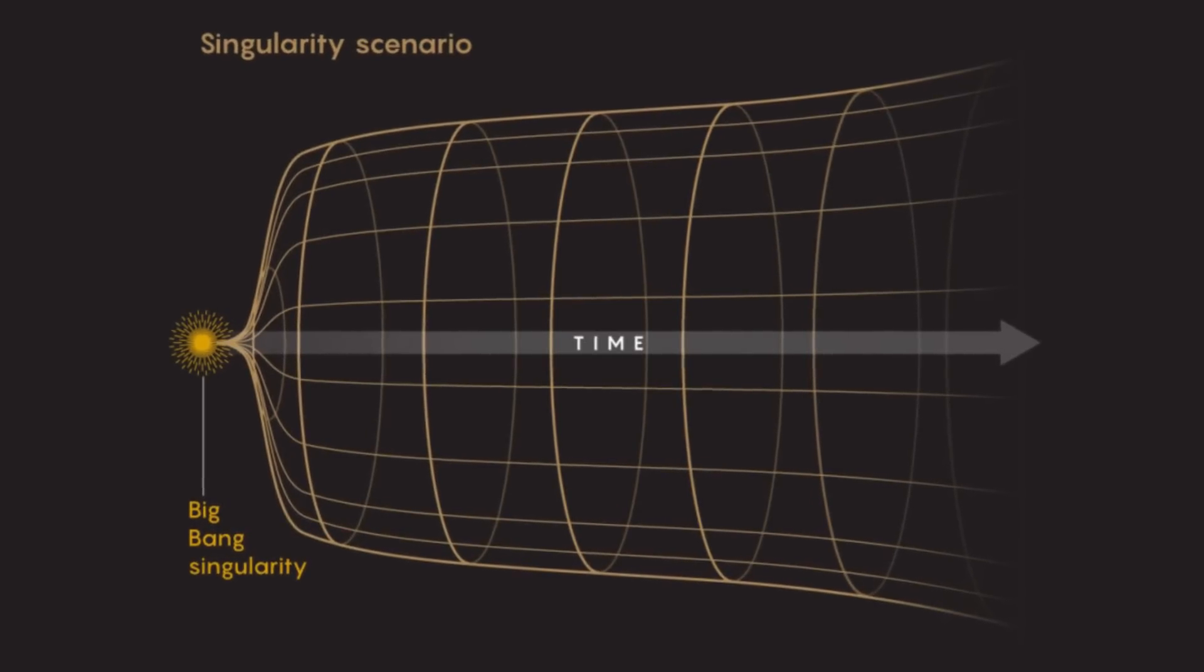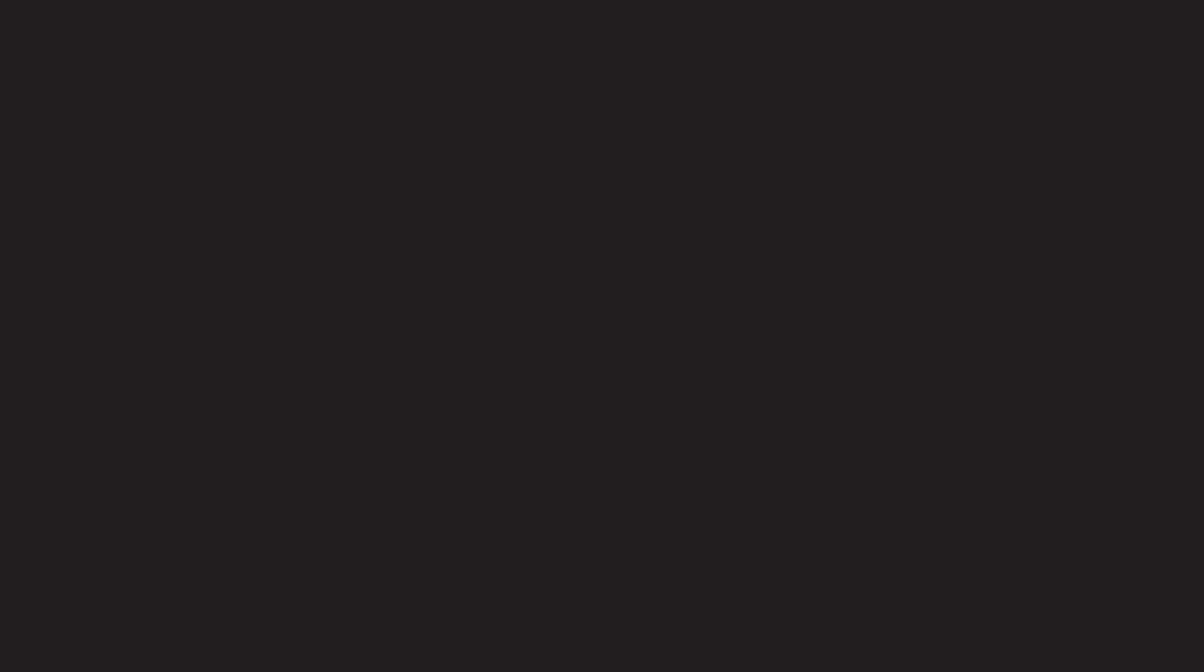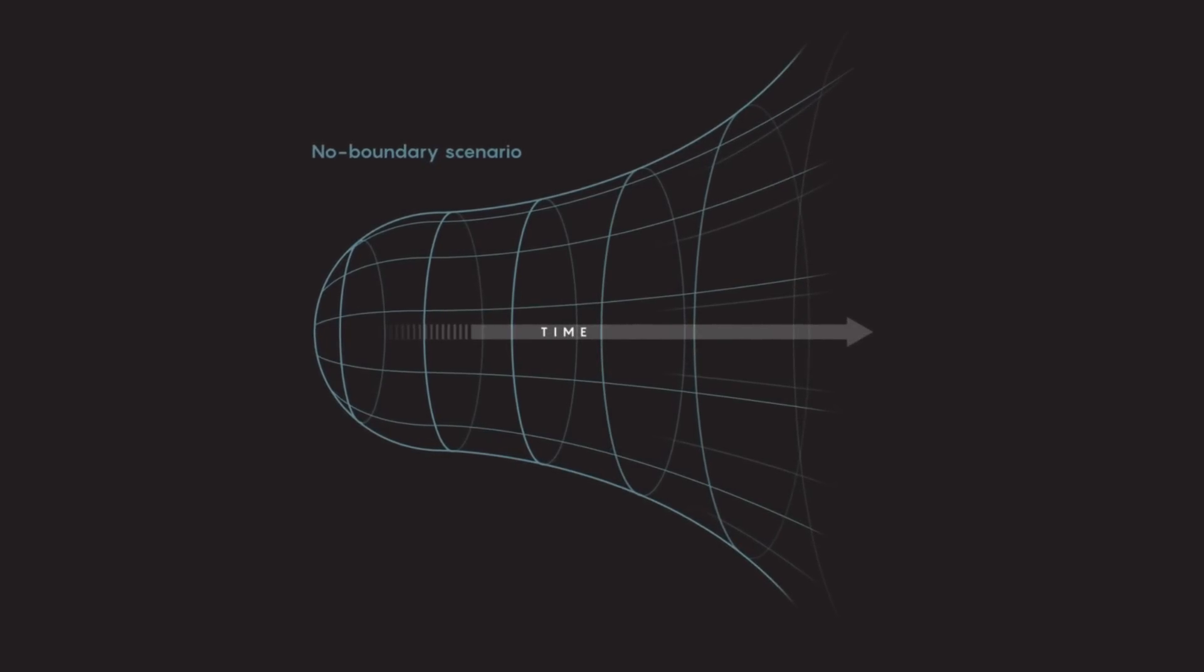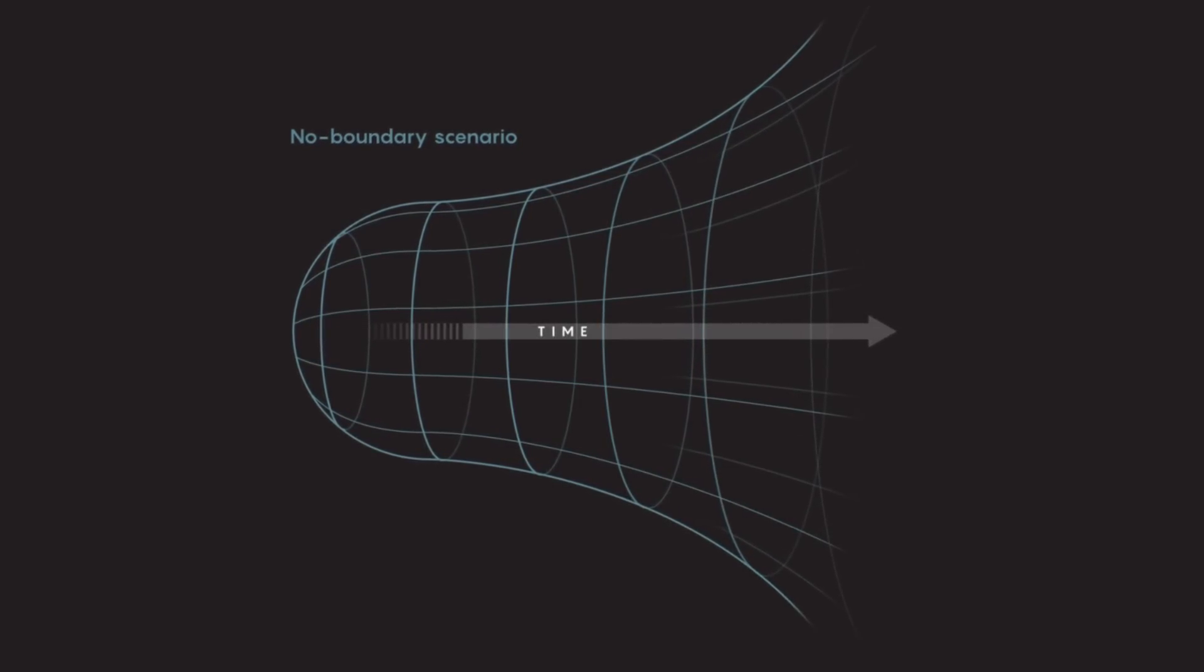Traditionally, we perceive time as a linear progression, a constant ticking clock from past to present to future. But Hawking and Hartle suggested otherwise, correlating time with the size of the universe and other properties, most notably entropy.